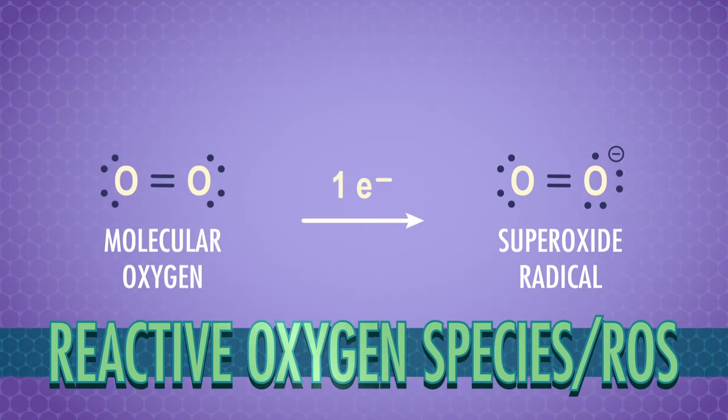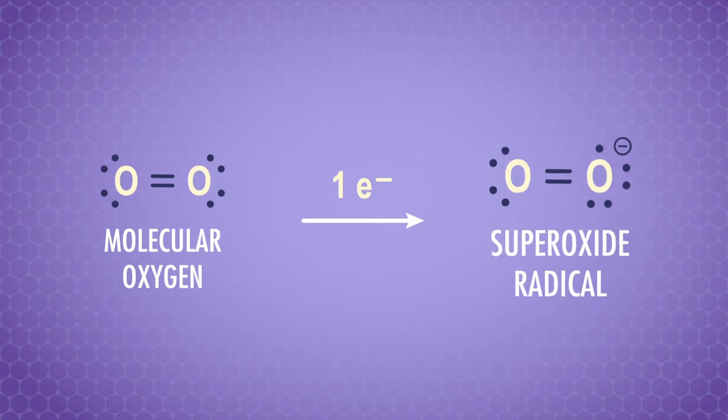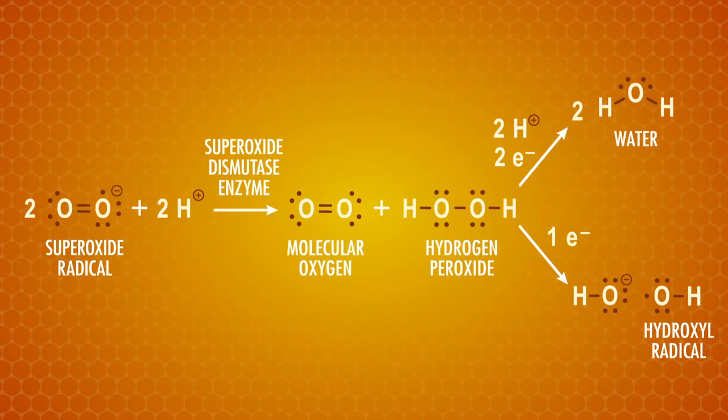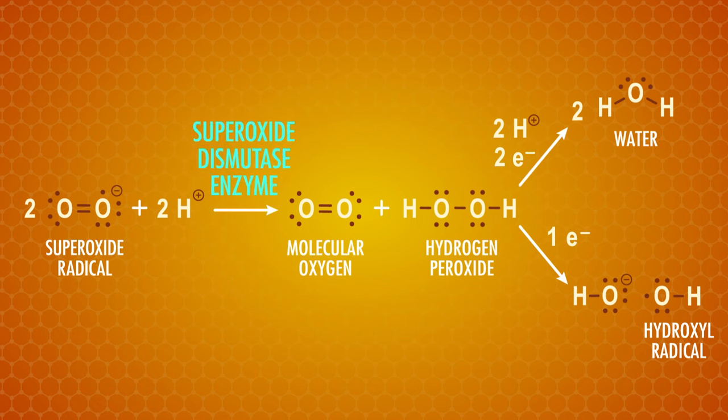They react with radicals, which are molecules with a single, unpaired electron. We need radicals to stay alive. They combine with oxygen as part of our normal metabolism, but sometimes these radical reactions produce too many reactive oxygen species, or ROS, like the superoxide radical.